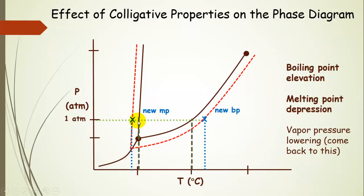Let's look at the melting point first. This was our normal melting point for the pure solvent. If we go over to the dotted line indicating the solution, the melting point is now at a lower temperature than it was for the pure solvent. Looking at the boiling point — here's the normal boiling point for the pure solvent. Once we add these non-volatile solute particles, we end up with a higher boiling point, shifted to higher temperatures. So the boiling point is elevated and the melting point is depressed or lowered. We'll also talk about vapor pressure lowering and the phase diagram later in the presentation.